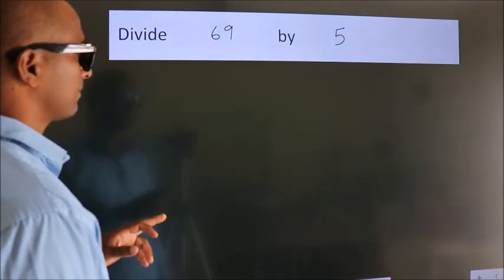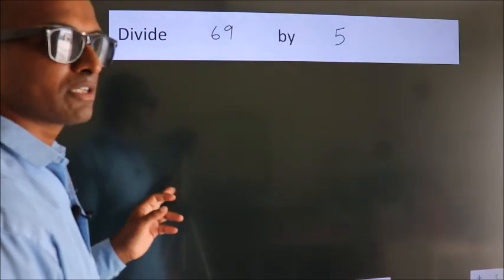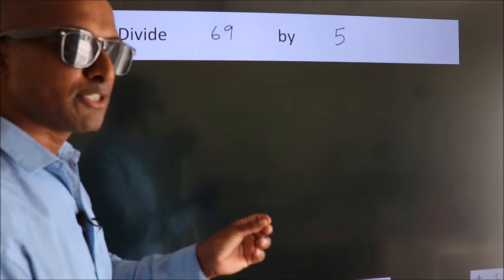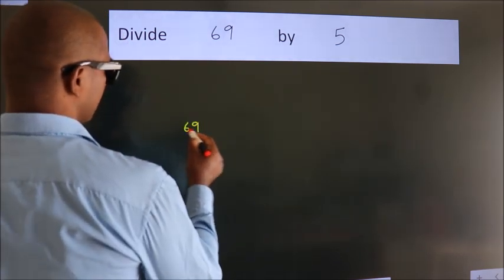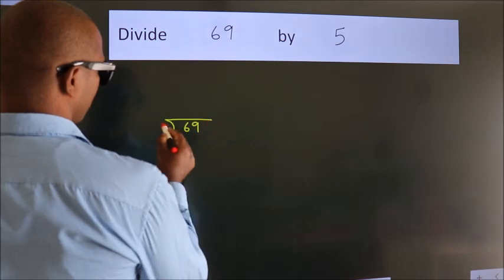Divide 69 by 5. To do this division, we should frame it in this way: 69 here, 5 here.